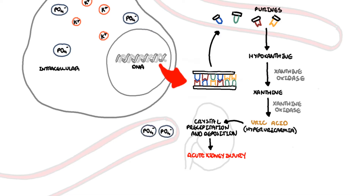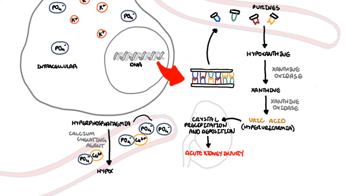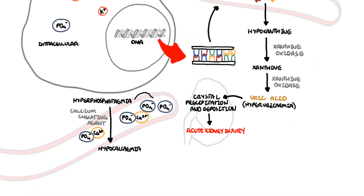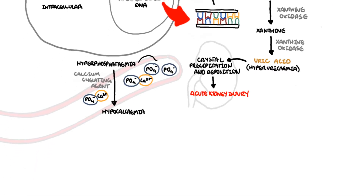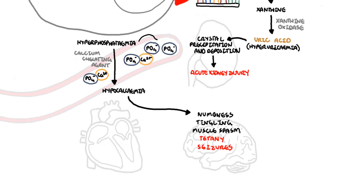Elevated phosphate in the blood acts as a calcium chelating agent — the phosphates in the bloodstream will bind to calcium, lowering calcium level stores. When you have low calcium, hypocalcemia, you can develop symptoms such as tingling, numbness, muscle spasm, and in severe cases, tetany and seizures and arrhythmias.